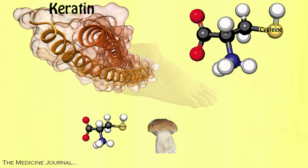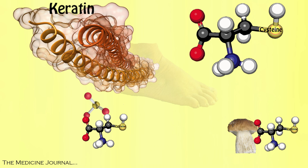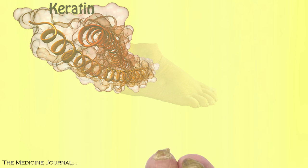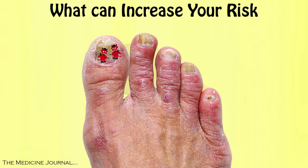These fungi use cysteine to produce sulfite. Once the sulfite is produced, it clings to the cysteine bonds and thus the process is repeated. The result is keratin that no longer has cysteine in it and it becomes brittle, misshapen, and hideous. There are several things that can increase your risk of having your nails infected by these little demons of destruction.